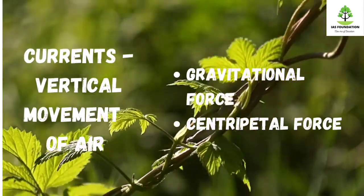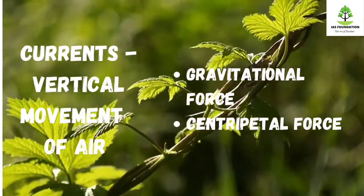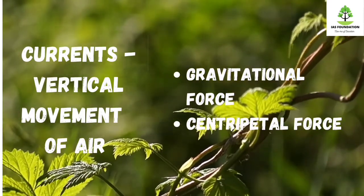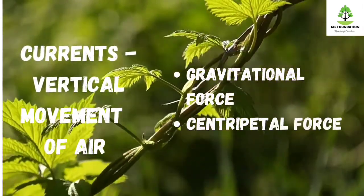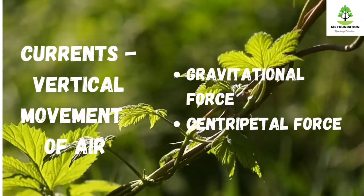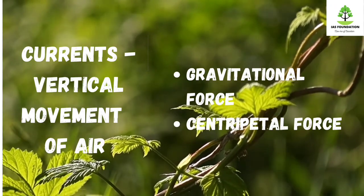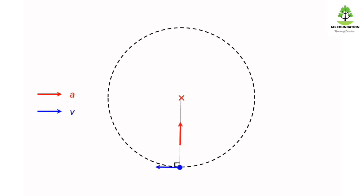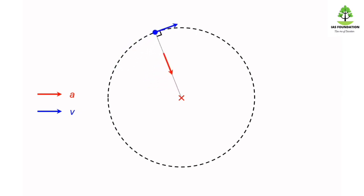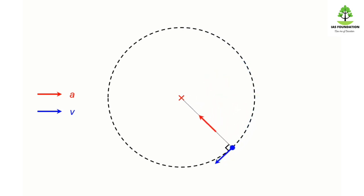For vertical movement, the key force is the gravitational force. There is also centripetal acceleration involved. The vertical movement relates to circular movement, and the centripetal acceleration acts toward the center of the circle.